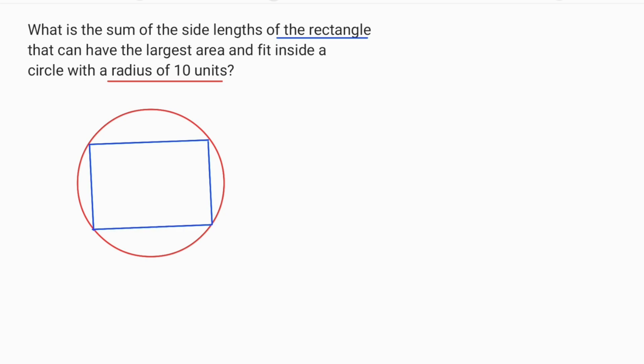We know that these are 90 degrees because of rectangle and if we connect these two corners, this line must be diameter because it's opposite of the 90 degrees.